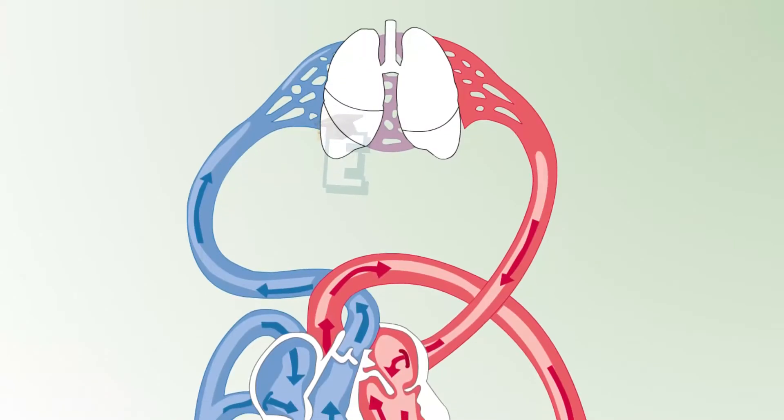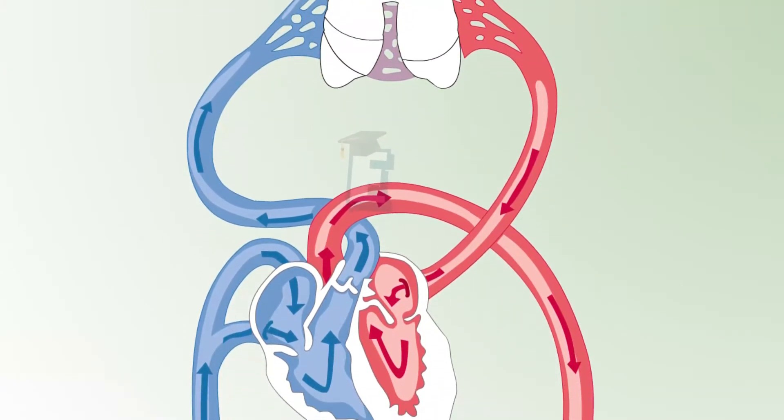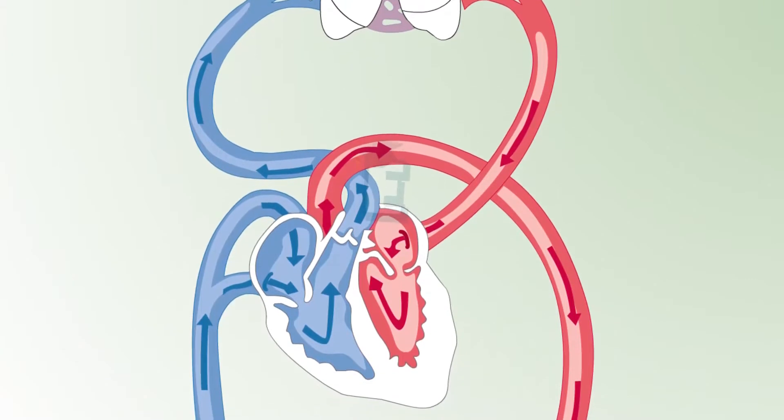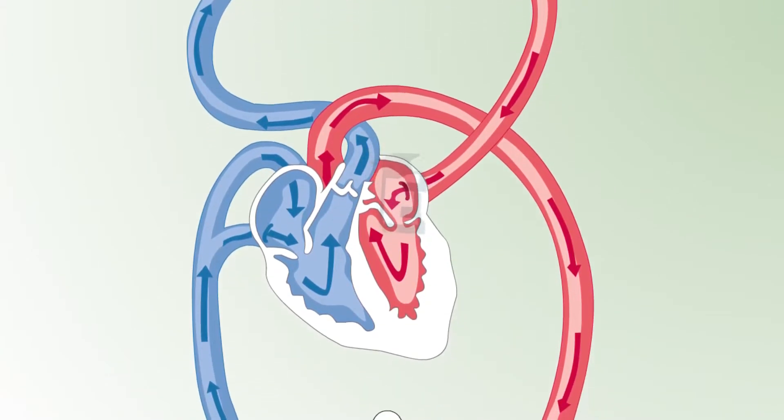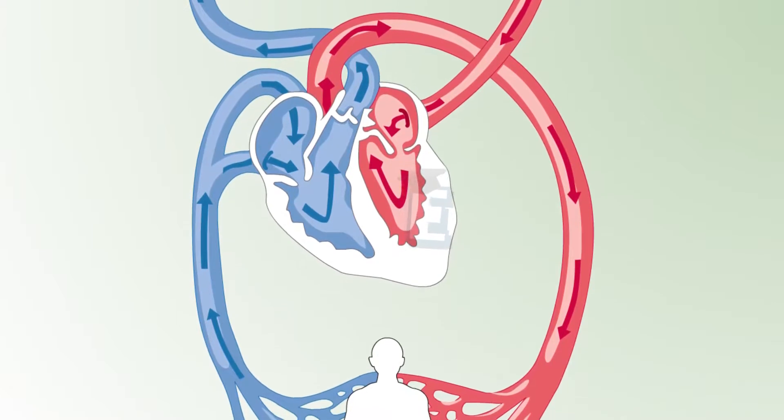At a complete circulation, blood passes the heart twice. Therefore, it is called double circulation of blood, which consists of pulmonary circulation and systemic circulation.